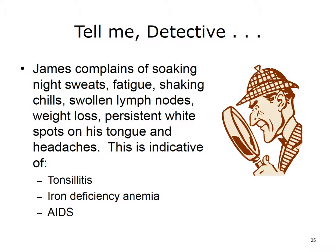Did you guess AIDS? If no treatment is provided for the HIV infection, the disease typically progresses to AIDS in about 10 years. By the time AIDS develops, the immune system has been severely damaged, making one susceptible to opportunistic infections — diseases that wouldn't trouble a person with a healthy immune system. The signs and symptoms of some of these infections may include soaking night sweats, shaking chills or fever higher than 100 degrees Fahrenheit (38 degrees centigrade) for several weeks, chronic diarrhea, persistent white spots or unusual lesions on the tongue or mouth, headaches, persistent unexplained fatigue, swollen lymph nodes, and weight loss.